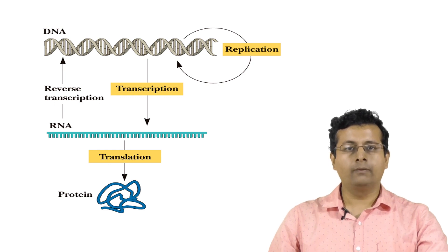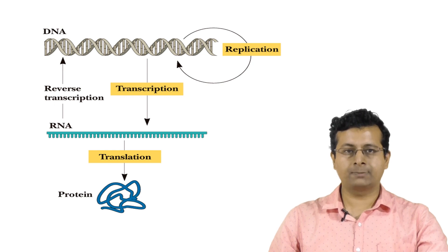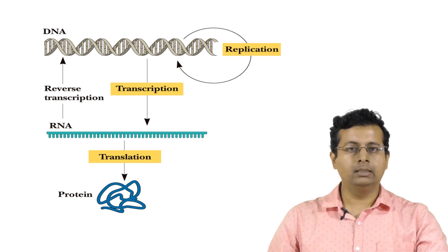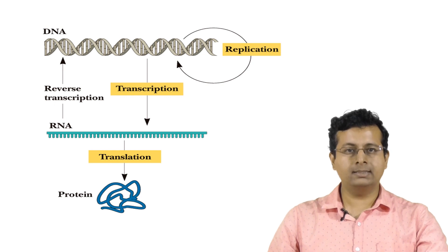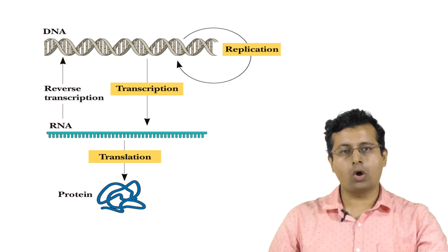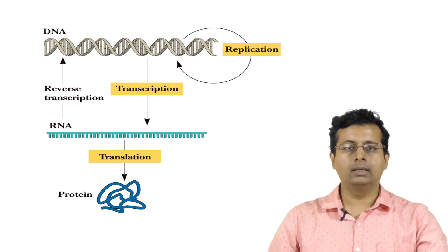Production of protein from a DNA blueprint is called gene expression. Producing a protein from information in the DNA gene is a two-step process. The first step is the synthesis of an RNA that is complementary to one of the strands of the DNA. This is called transcription.